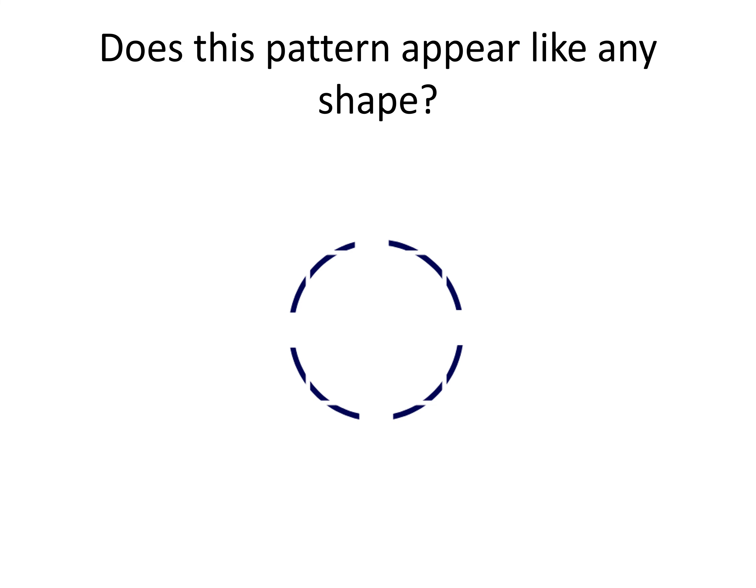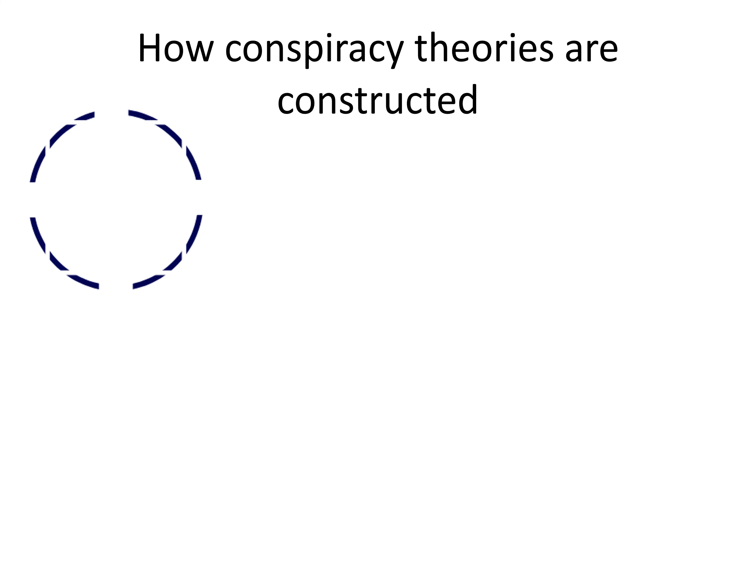If you look at the pattern on your screen, do you see a shape? Just answer in your head — do you see a shape when you look at the pattern on your screen? Maybe some of you said yes, I see a shape, I see a circle. But do you really see a circle? Is that really a circle? If you said yes, you see a circle, that is because you added pieces to the pattern. This is much like how a conspiracy theory works. We can look at that pattern and think about how conspiracy theories are made.